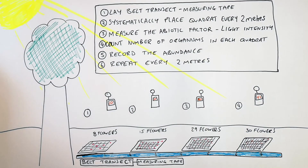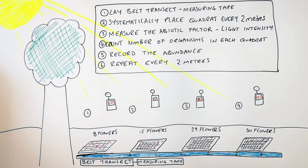You can then make a conclusion based on your results. As the light intensity increased away from the tree, the abundance of flowers in each quadrat also increased. So that means as you increase sunlight, you increase the abundance of flowers.